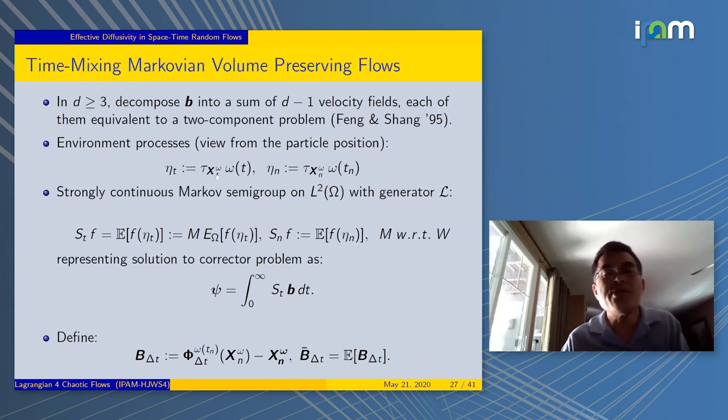Introduce something called the environment process, which is τ_w. You essentially view from the particle position something like a moving coordinate. This is the discrete version. Use that to define a Markov semigroup. Here's the evolution operator and the discrete-type version. After that, you can use this operator to define a corrector.